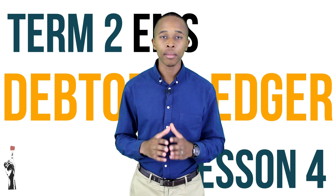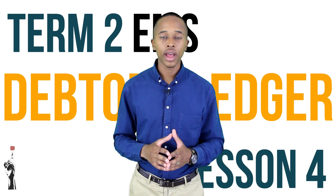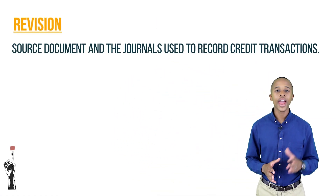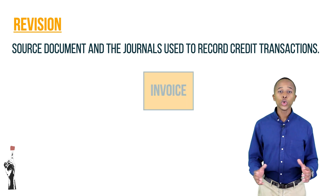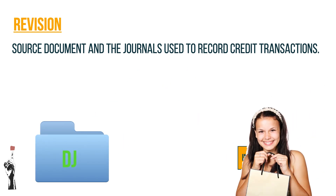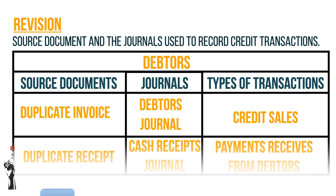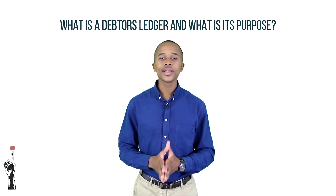As we always say, if you don't get the concepts the first time, just watch the videos again. Let's start with some revision — the source documents and journals used to record credit transactions. The duplicate invoice is the source document used for the DJ, where credit sales are recorded, and the duplicate receipt is the source document used for the CRJ, when debtors pay off their debts.